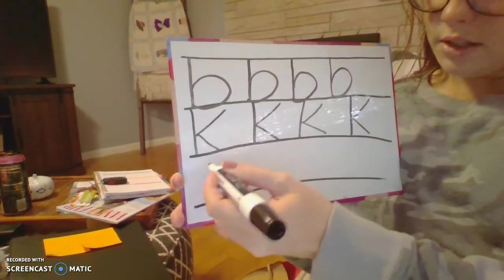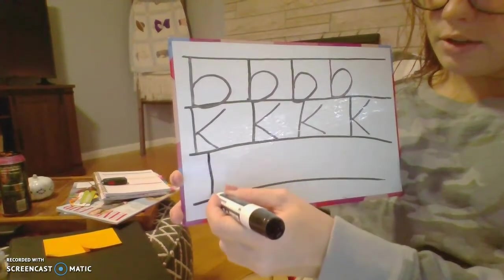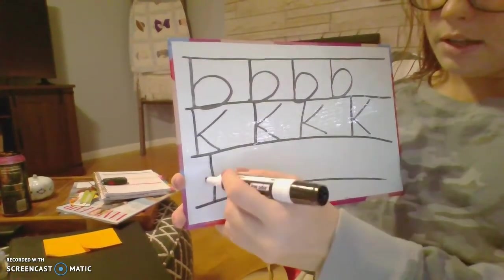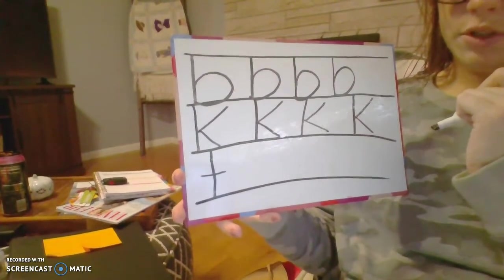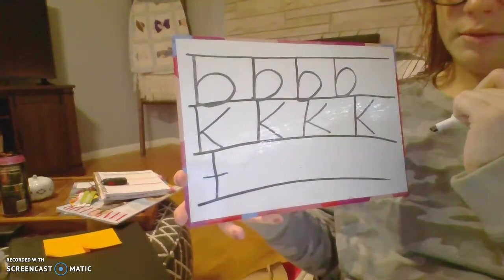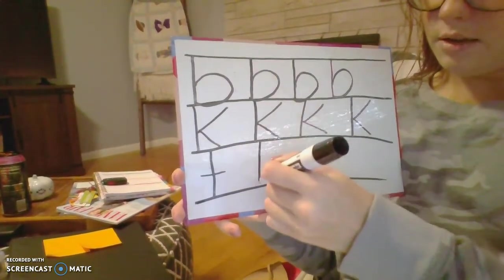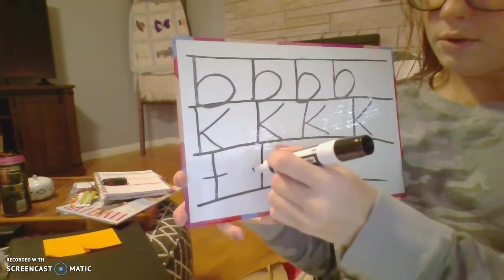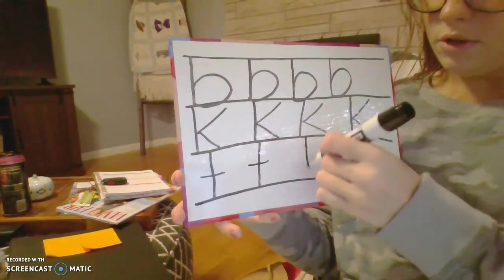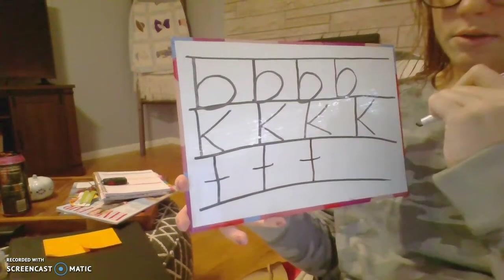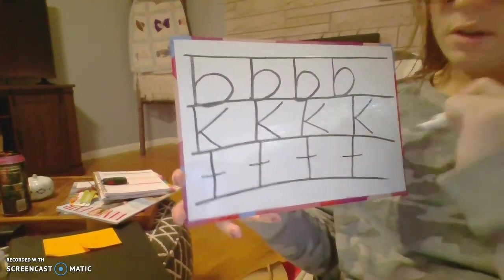The letter T starts at the top of the line and goes straight down to the bottom, and you're going to make a little cross in the middle — just another straight line going across. Let's do it four times: straight down and over, straight down and cross, straight down and cross.